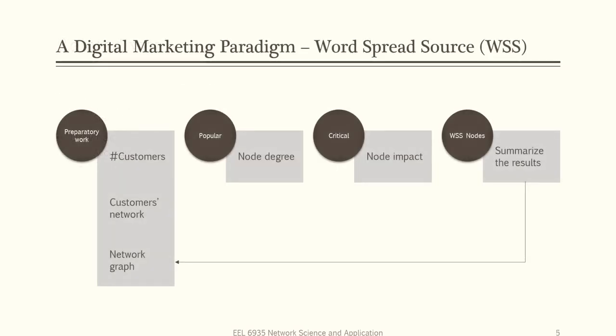So, here is what I proposed, which is both accurate and with minimum complexity as possible. Let's look at the design architecture. This is called WSS Word Spread Source Model. There are three stages. And before the first stage, we have a preparatory work to do, which is to first find out the total number of the customers, to find out the particular customer's network, their relationship with others. And then we can form a network graph to begin the analysis.